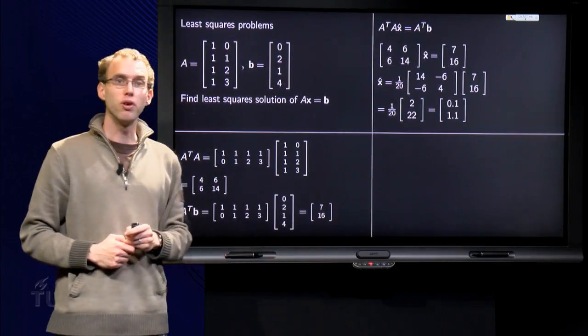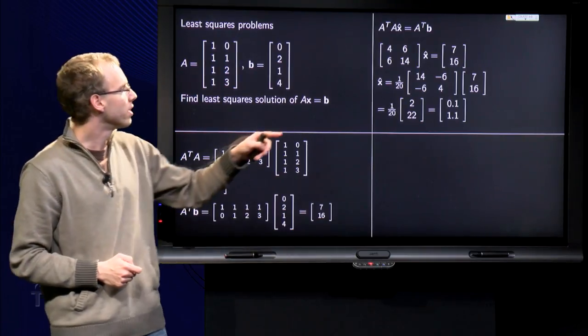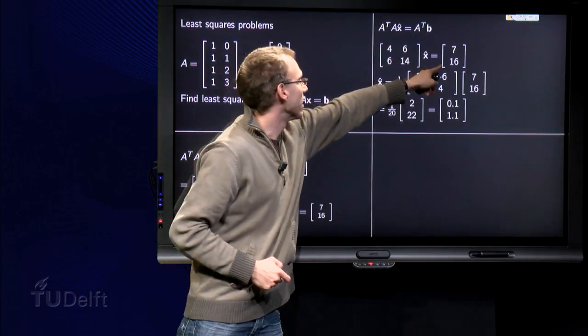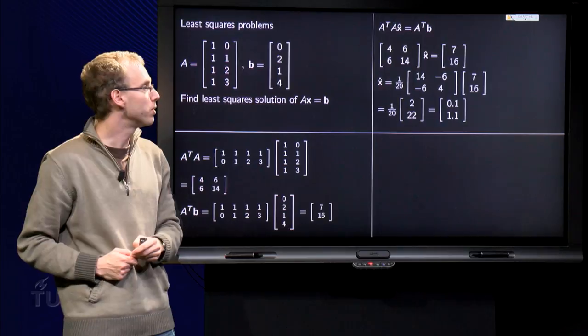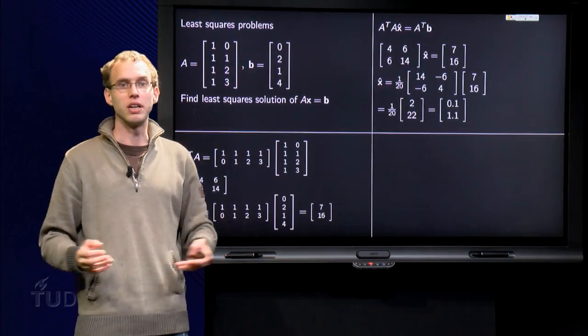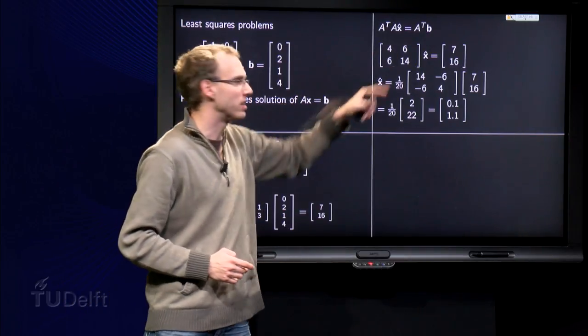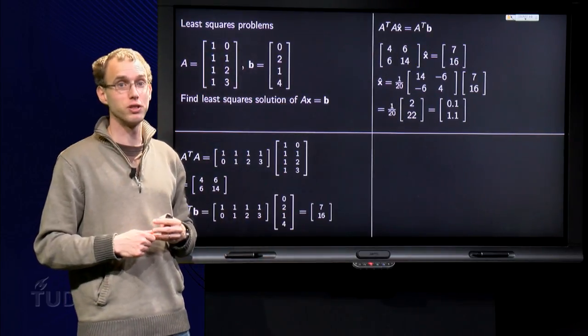And then we want to solve A transpose times A times x hat equals A transpose times b. We have A transpose A and A transpose b already computed, and we want to find x hat. You can use row reduction, but in this case, since we have a 2 by 2 matrix, we can also use the inverse matrix.